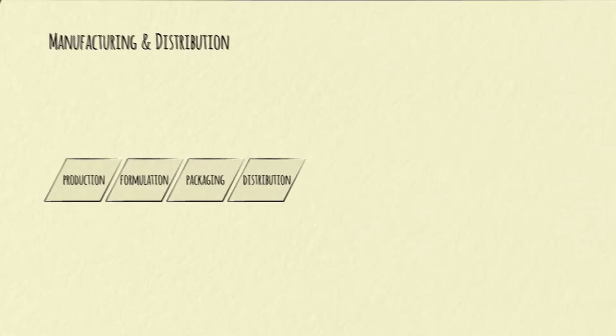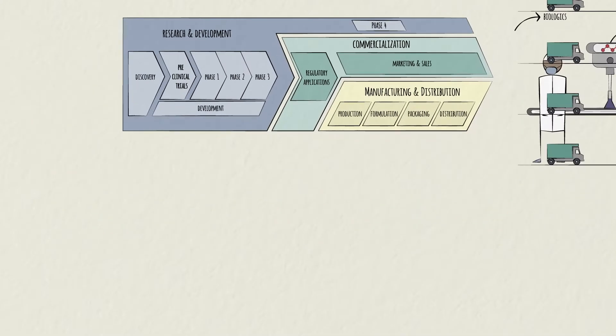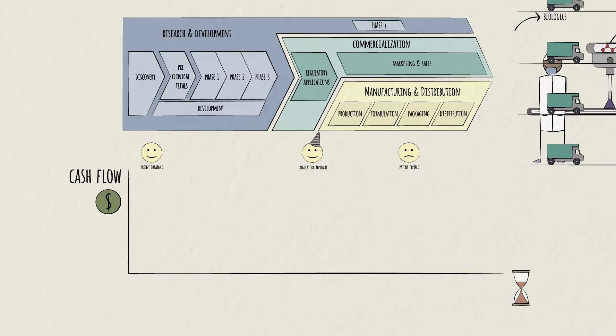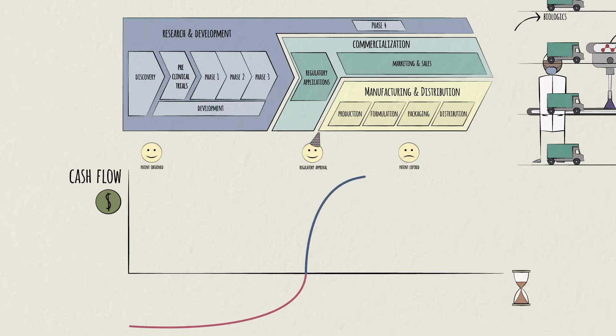This life cycle is what makes pharma such a unique industry and drives its economics. It's reflected in the cash flow of Anna's drug, which looks like this. First, there's major upfront investment going into R&D. In fact, the pharma industry spends more on R&D than any other industry. It's about 20% of sales, compared to about 6% in aeronautics, for example. Then, once the drug is approved and exclusive sales begin, revenues rise as Anna's drug becomes available around the world. But when the patent runs out, biosimilars emerge, competing with her branded drug at a lower cost, and revenues fall.